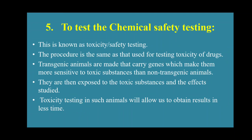The next reason is chemical safety testing, also known as toxicity or safety testing. The procedure is the same as that used for testing the toxicity of a drug. Transgenic animals are made that carry genes which make them more sensitive to toxic substances than non-transgenic animals. They are then exposed to the toxic substances and the effects are studied. Toxicity testing in such animals gives results in less time. If any drug is prepared, we first test it in transgenic animals before using it in humans.